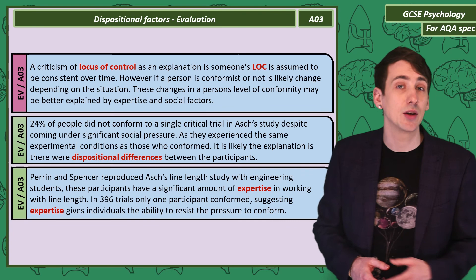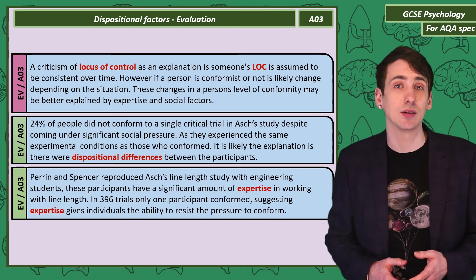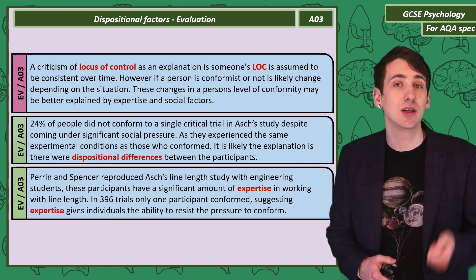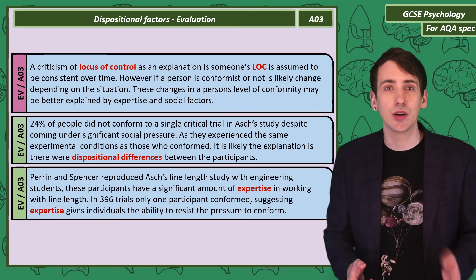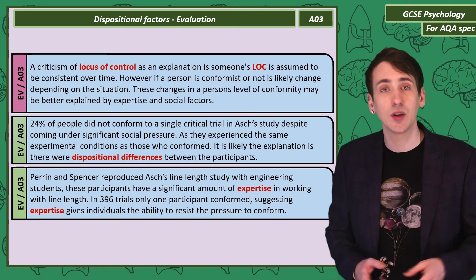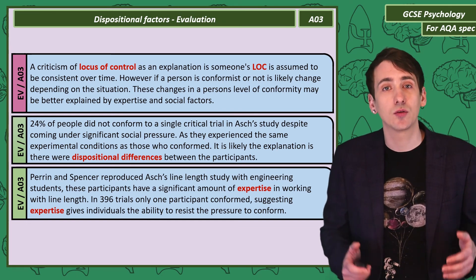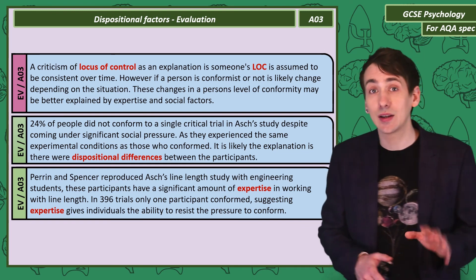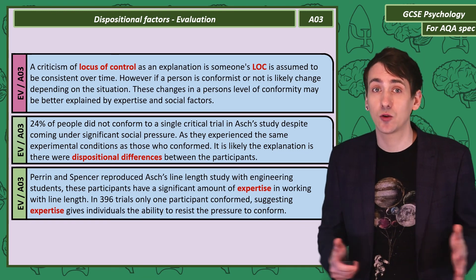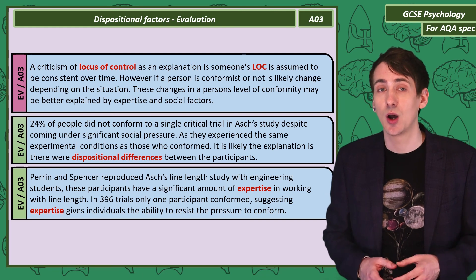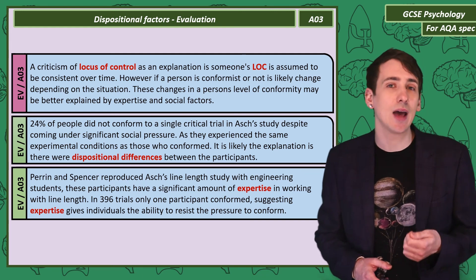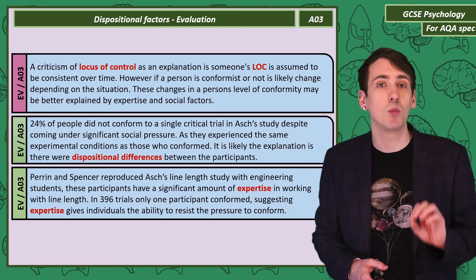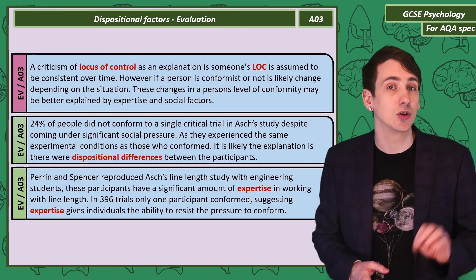There has been a replication of Asch by Perrin and Spencer. They reproduced the line length study with engineering students, and in this study only one participant conformed to the group over 396 trials. This lack of replication is a criticism of Asch's original study, but could be evidence of the role of expertise, with engineering students being more confident judging line length.